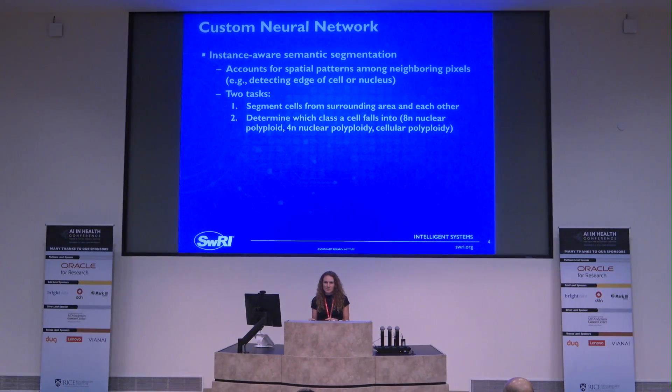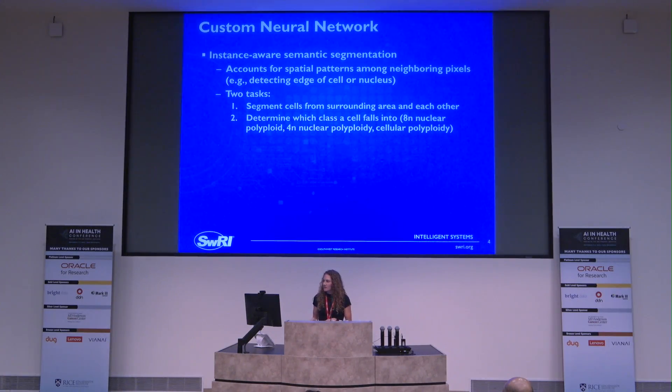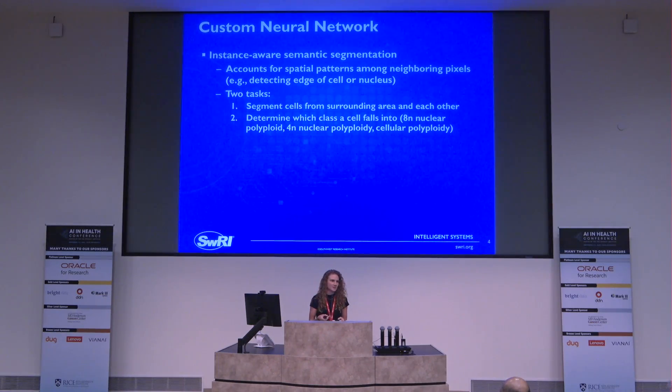The network is also able to classify that polyploid cell into the type of polyploid. For this project, we classified 8N nuclear — meaning four sets of chromosomes in one nucleus — 4N nuclear, meaning two sets of chromosomes in one nucleus, and then cellular ploidy, where we only saw cells that contained two nuclei within a cell.